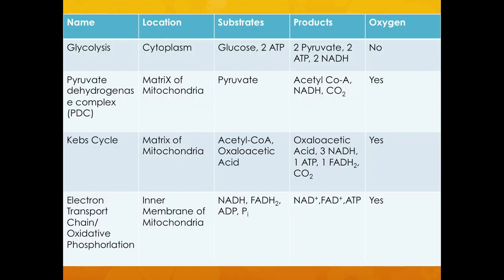This chart is very important because it basically summarizes everything that happens during cellular respiration. There are four main events: glycolysis, pyruvate dehydrogenase complex, the Krebs cycle, and the electron transport chain, or oxidative phosphorylation.